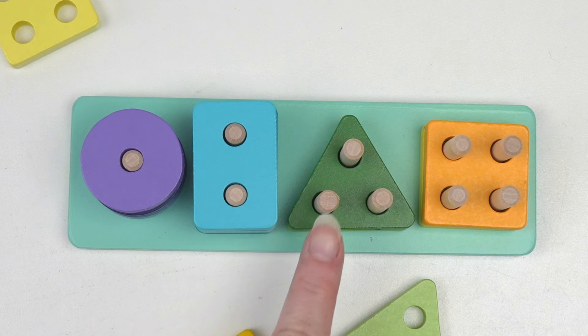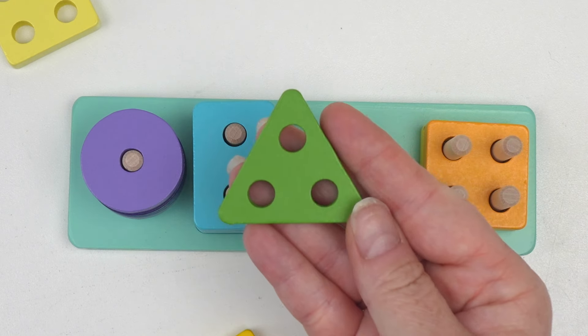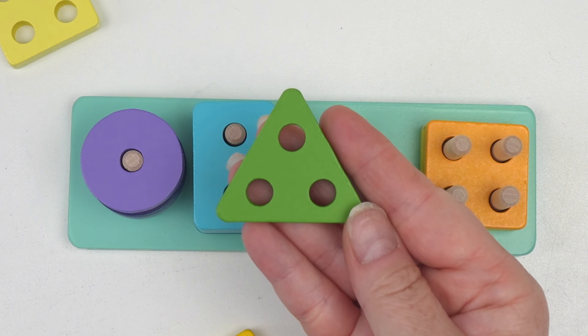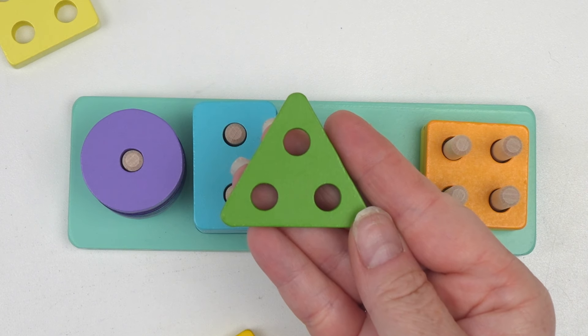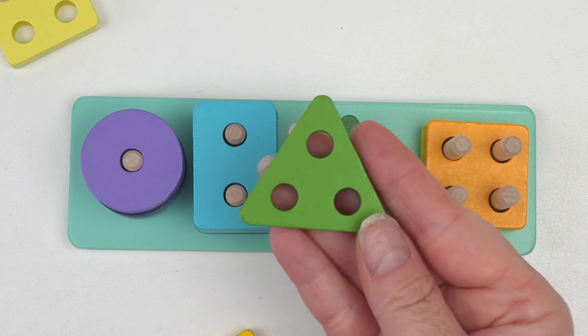Our next shape had one, two, three holes. Three holes. What else did the triangle have three of? Yes! One, two, three sides.